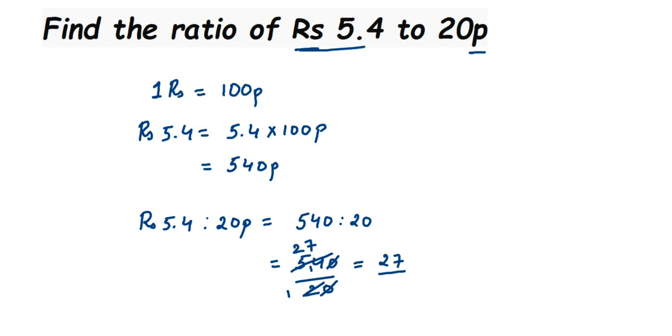Which is nothing but 27 is to 1. This is the ratio. Whenever you're finding the ratio, the number has to be in reduced form. We cannot write 540 upon 20 because we can cancel it further. We have got 27 upon 1 and we cannot cancel this further.